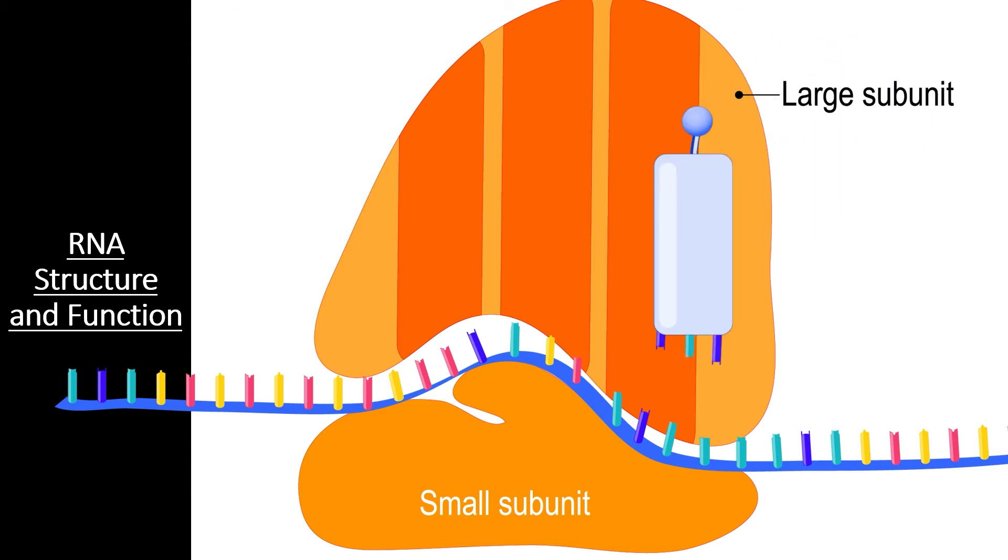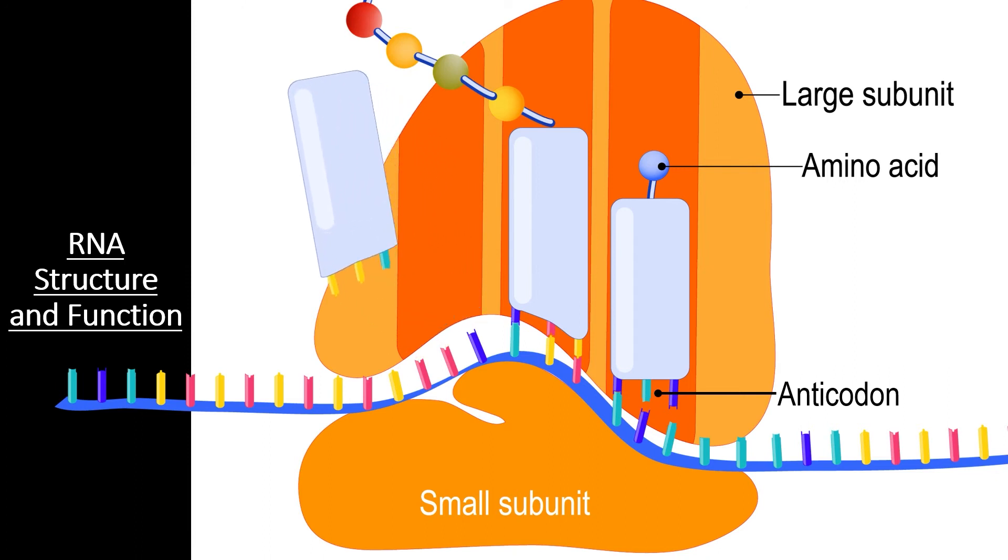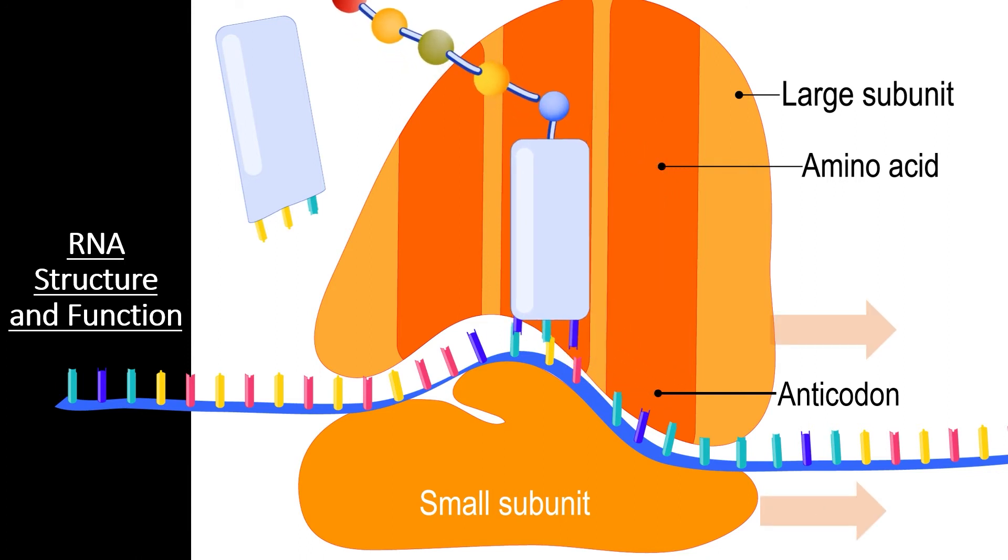Each transfer RNA carries a specific amino acid and has a specific anticodon sequence exposed to the mRNA. If all three of these anticodon nucleotides are perfect complements of the codon sequence, the tRNA molecule will add its amino acid to the growing polypeptide chain. Then, the empty tRNA will be ejected from the ribosome and recycled. As this happens, the ribosome moves along the mRNA molecule to the next codon, until it reaches a stop codon and the sequence is finished.